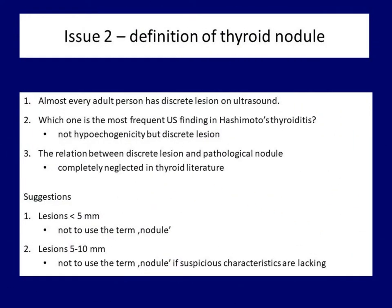Going further in the algorithm, the next problem is the interpretation of the nodule. Even a healthy thyroid inevitably has discrete lesions — their presence is not the exception but the rule. Hashimoto's thyroiditis is the real problem, as the most common ultrasound sign is a discrete structural abnormality of at least 5 mm, found in more than 90% of Hashimoto's patients. Considering the magnitude of this problem, it is very strange that the thyroid literature completely neglects this issue. A separate chapter will be devoted to it in a later advanced course.